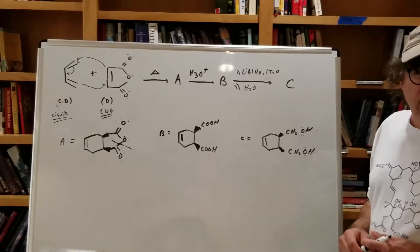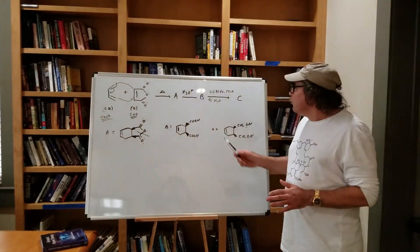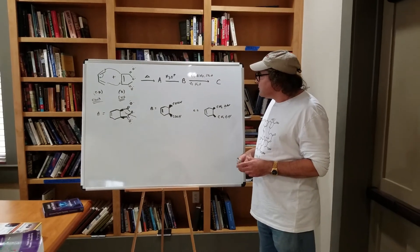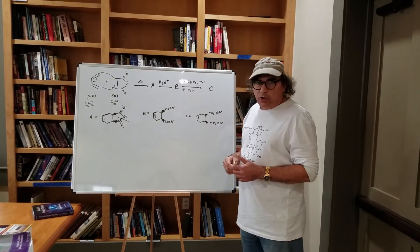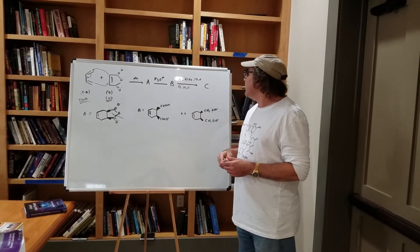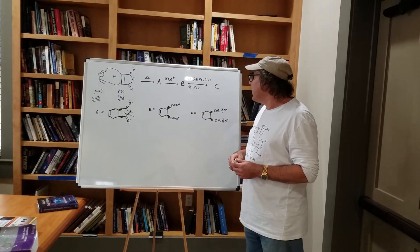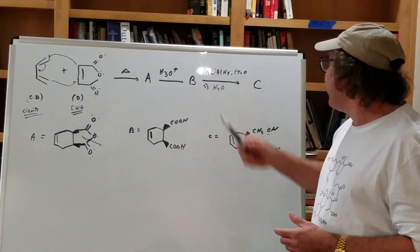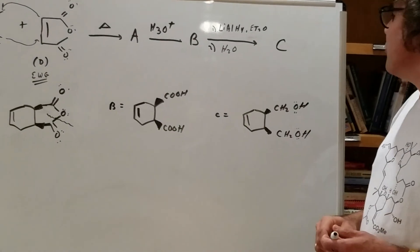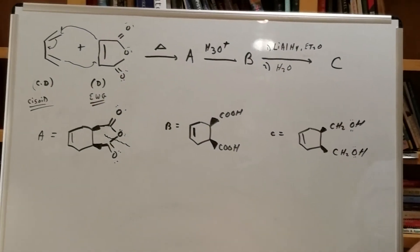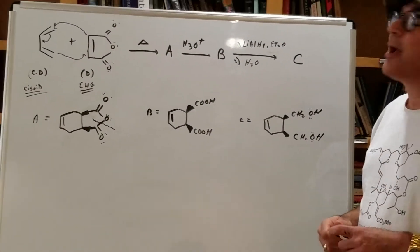This is a type of question you're going to encounter on the DAT. You want to make sure you can think of sequences. So we get a Diels-Alder reaction, we follow it up by the hydrolysis of an anhydride, and then I finish it off with a reduction. I hope that gives you a good idea of what to expect on the DAT.